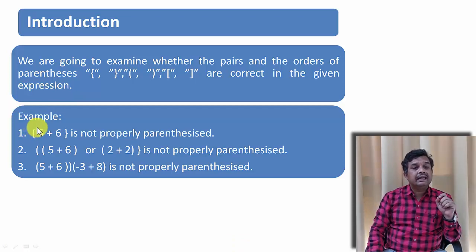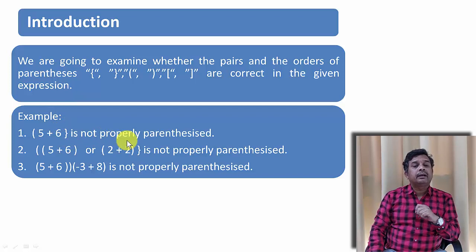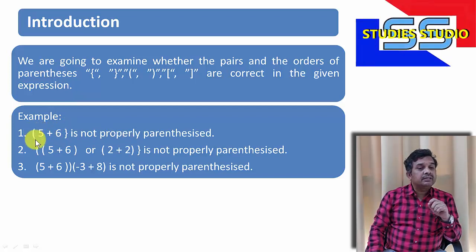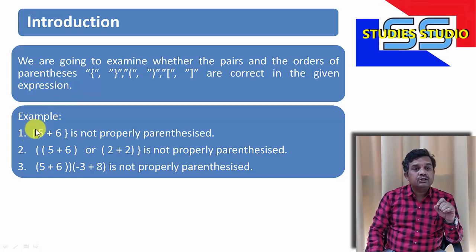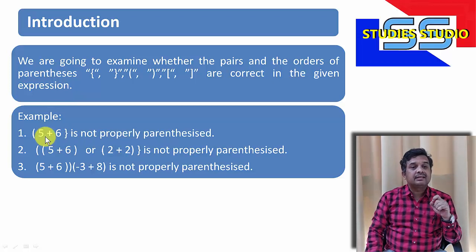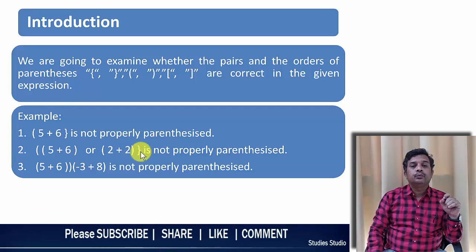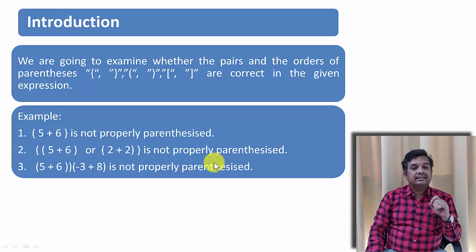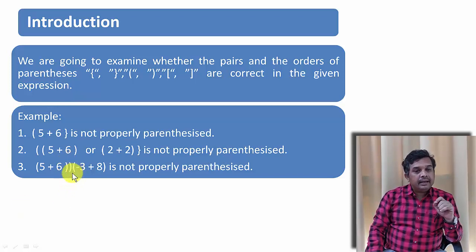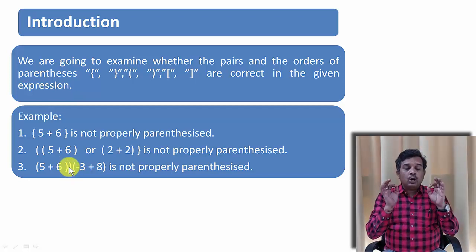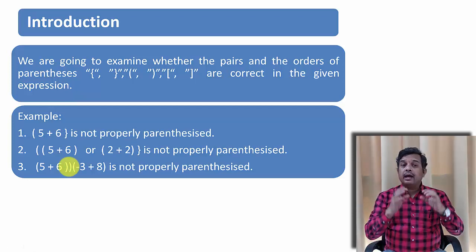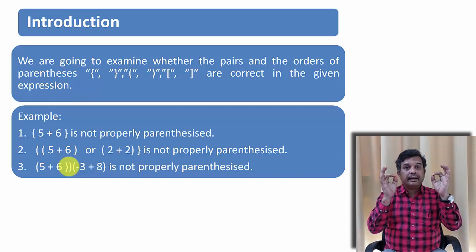For this particular expression, you can see here — if I have started a simple bracket and ended with a flower bracket, it is not properly parenthesized. Either the flower bracket should be starting at the beginning or the simple bracket should be ending at the end. Similarly, I have started two brackets but ended with one. And here, I have started a single bracket but ended with two. This is also not well parenthesized. You can also check that in the middle there is one extra right bracket — that is also not well parenthesized. So in this video, we are going to check whether a particular expression is well parenthesized or not.